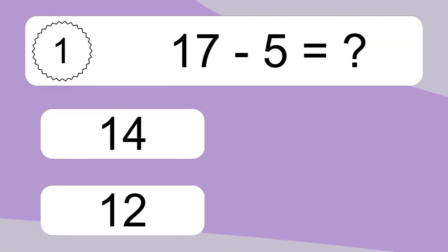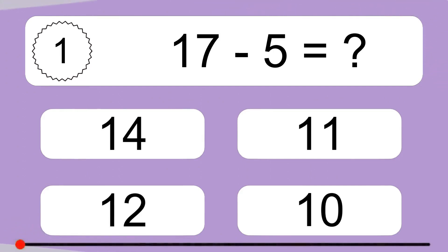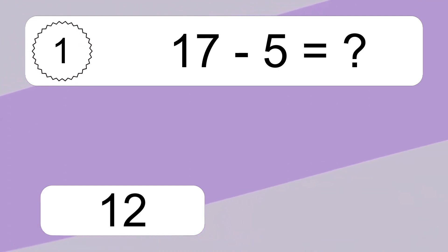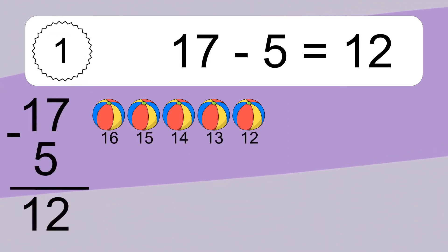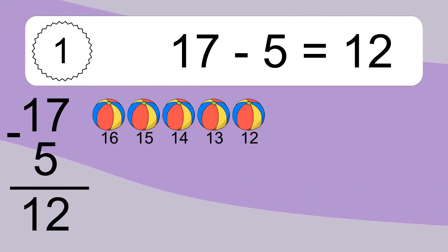17 minus 5 equals what? 17 minus 5 equals 12. Let's count it: 16, 15, 14, 13, 12.